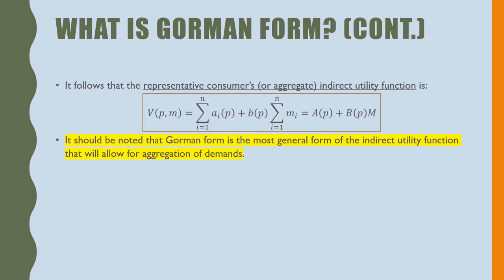It follows that the representative consumer's or aggregate indirect utility function is V(p,m) equal to the summation of all the A(p) terms from every consumer plus B(p)—only one of them—times the summation of all the income from every consumer. This could also be written as capital A(p) plus capital B(p) times the summation of all income m, which is written as capital M.